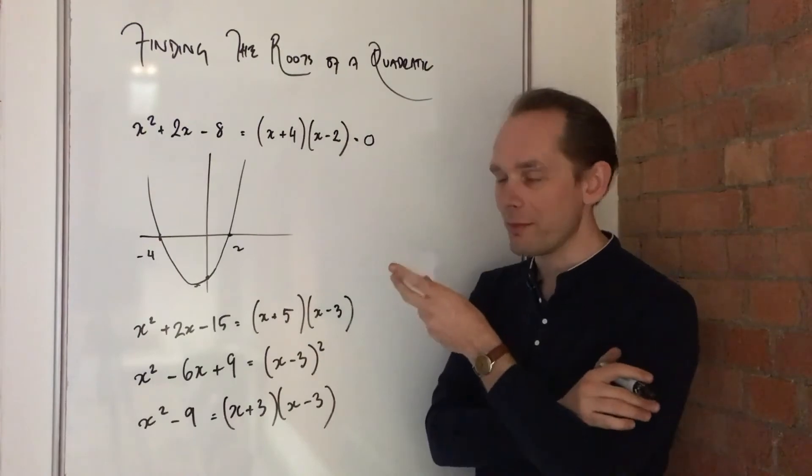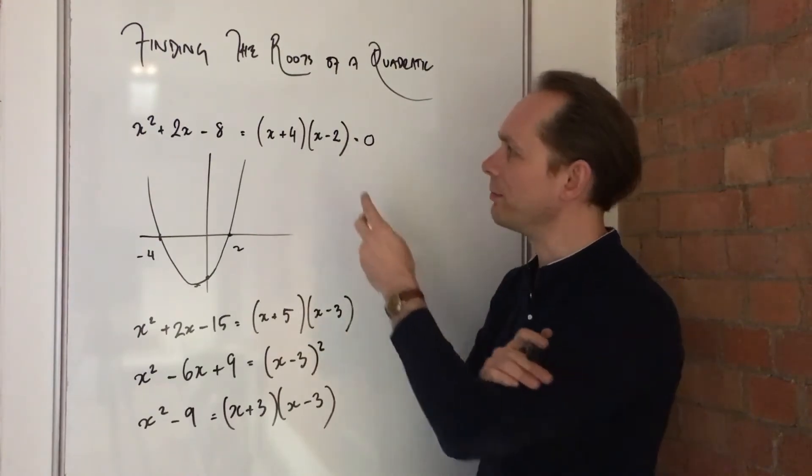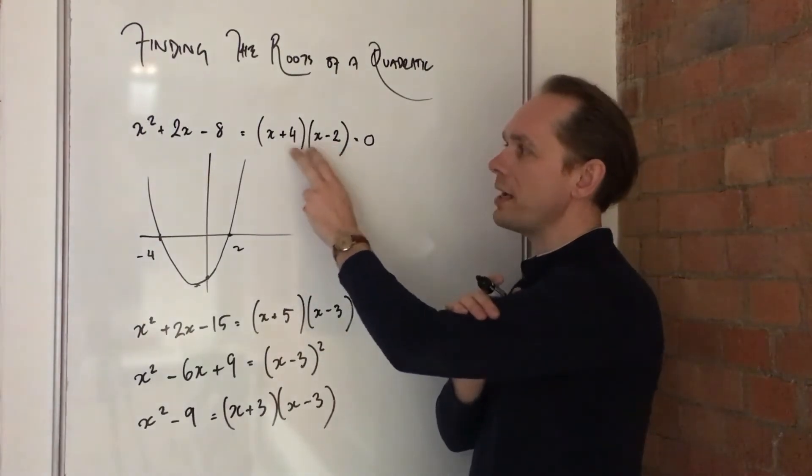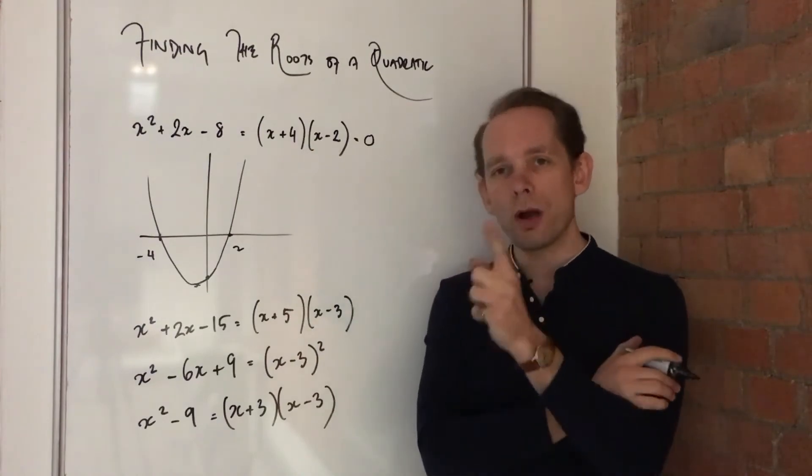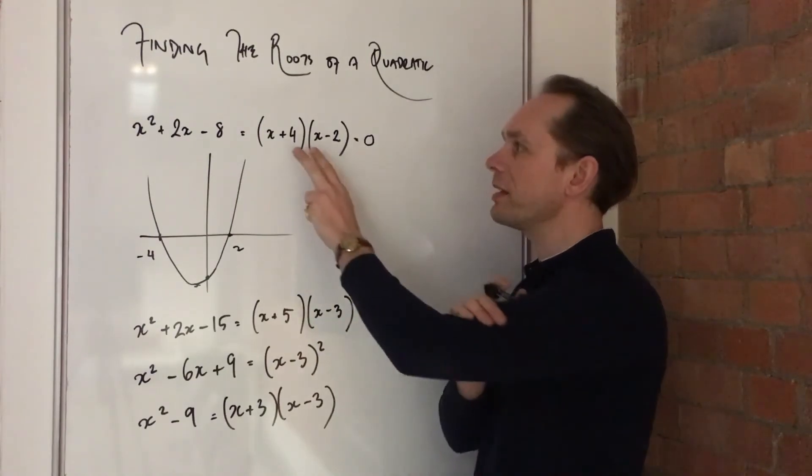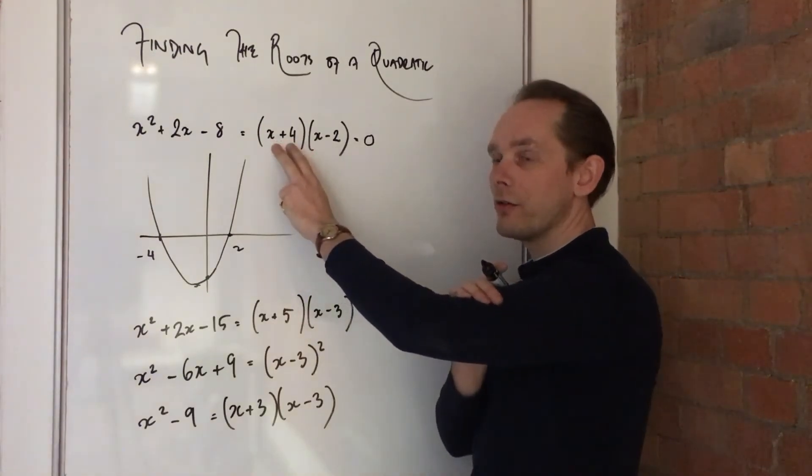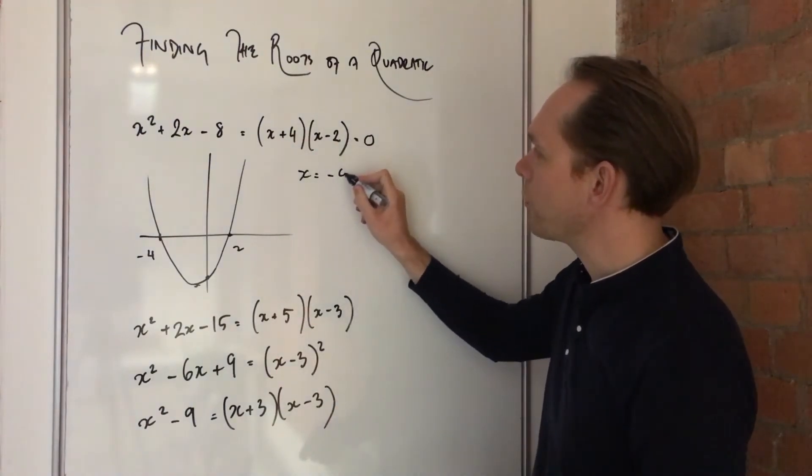So, this is the tricky bit, or the interesting, in my mind, bit. If two things multiply to make zero, then one of them must have been zero. So we say x plus 4 is zero, so x is minus 4.